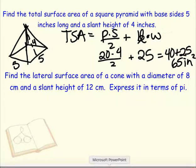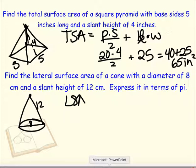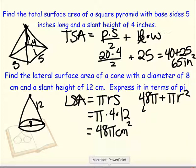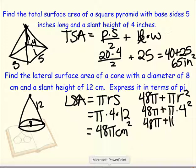Now for a cone with a diameter of 8 and a slant height of 12 — we'll leave the answer in terms of pi. The lateral surface area is πrs: pi times radius 4 times slant height 12, so 4 times 12 is 48π centimeters squared. For the total surface area, we take 48π and add πr²: 48π plus pi times 4 squared gives 48π plus 16π, which equals 64π centimeters squared. That is the total surface area — we just add the base. I hope this is helpful for your homework and studying.